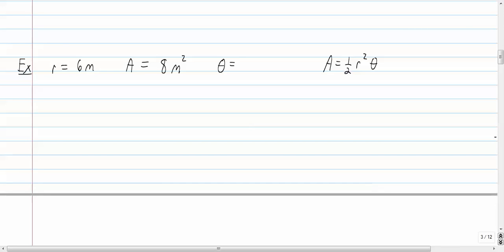So we're given that the radius is 6, the area is 8. Alright, so 8 equals one-half times 6 squared times theta.